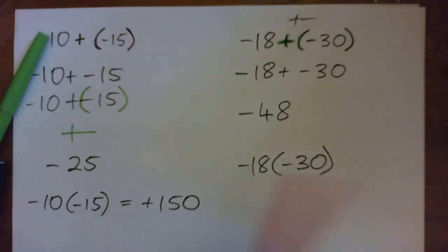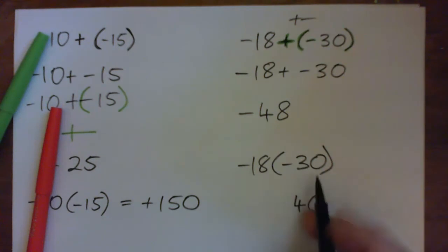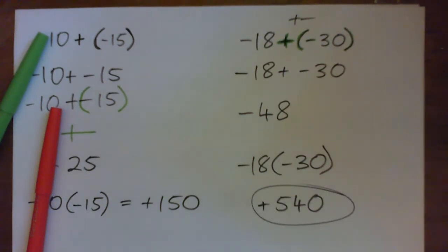And negative 18 times negative 30 is... 3 times 8 is 24. Put down the 4, carry 2. 3 times 1 is 3 and 2 is 5. Positive 540. Isn't that right? I think so.